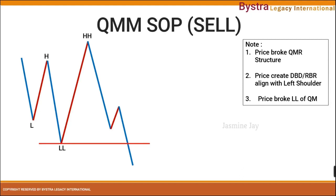Let's look at the SOP for QM manipulation for a sales setup. There is a QM structure: low, high, lower low, higher high. Normally on a QMR we would sell aligned with the left shoulder. Instead, price didn't react to the left shoulder — it made a base, drop base drop, continued downward, and broke the lower low, which is the QM head structure. So remember: first, price has to break the QMR structure; second, it has to create a drop base drop structure for a sale; and third, it has to break the lower low of the QM head. Once these three conditions are met, we can look for the sales setup of QM manipulation.